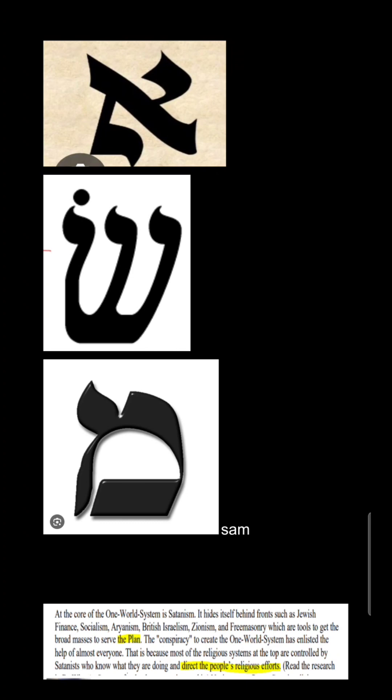It hides itself behind fronts such as Jewish finance, socialism, Arianism, British imperialism, Zionism, and Freemasonry, which are tools to get the broad masses to serve the plan. The conspiracy to create a One World system has enlisted the help of almost everyone. Most of the religious systems at the top are controlled by Satanists who know what they are doing and direct people's religious effort. Those Satanists are running the group Hamas with the word Sam, which spells N-W-O.